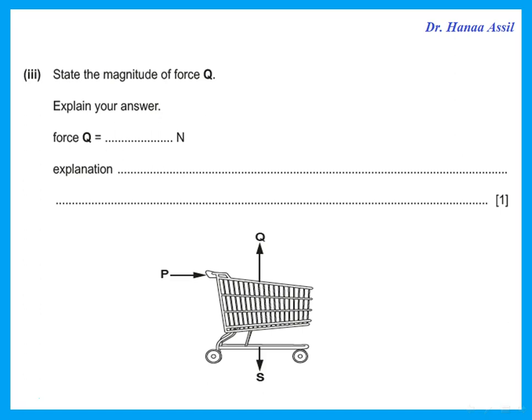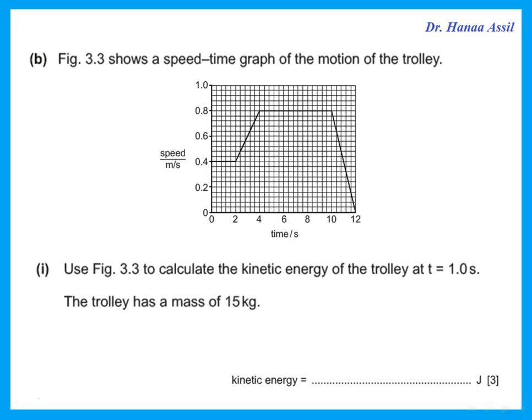What is the magnitude of Q? The trolley is moving forward — it's not moving up or moving down. That means Q must be equal to S. So if S was 150, then Q is also 150 because it is equal and opposite to S.